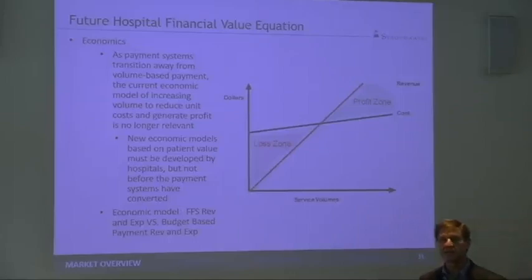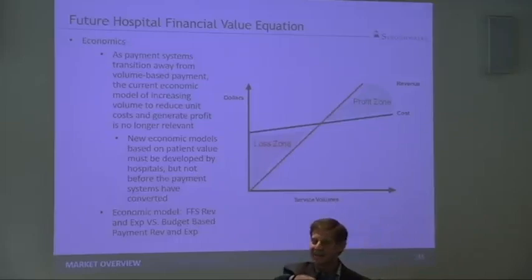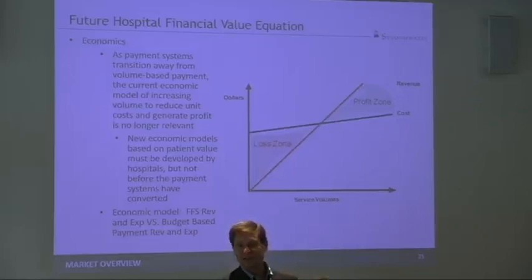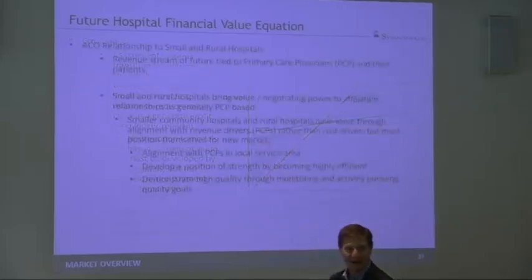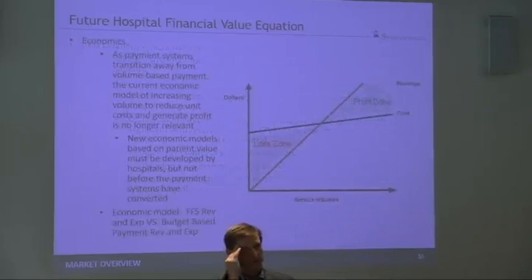Change it around to a population-based payment system. How do we increase revenue? What do we need more of? Not patients anymore — lives. You need more patient lives. How do we get more patient lives? Who are patients attributed to in most cases? Primary care. So a busy primary care practice has probably 2,000 patients in their panel.